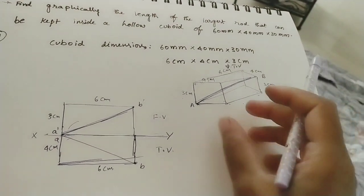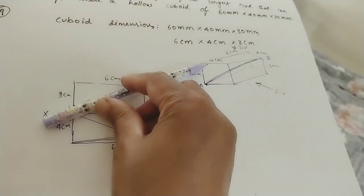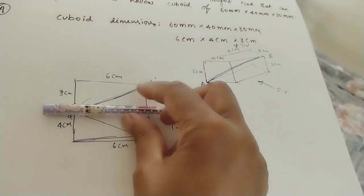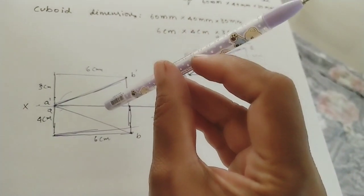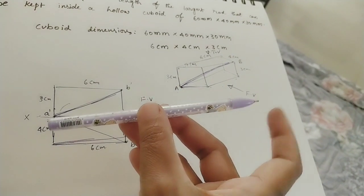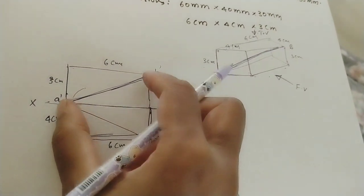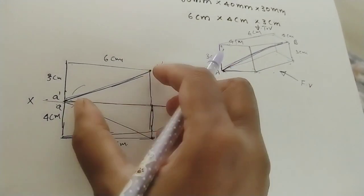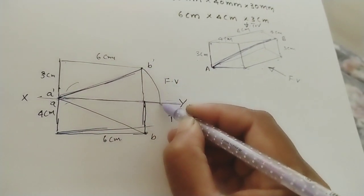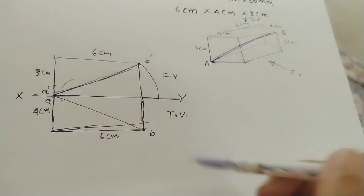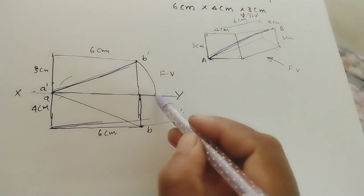Whatever length we see in the front view is less than the true length of the line — if the rod is tilted, we cannot see the true length. We tilt it to horizontal and see the total length, which gives the true length. So we tilt this — whatever this radius — by using a compass we do an arc with centre at a-dash. We are now tilting and looking in the top view. We take point B up to the locus of B, then draw a vertical projector line there.